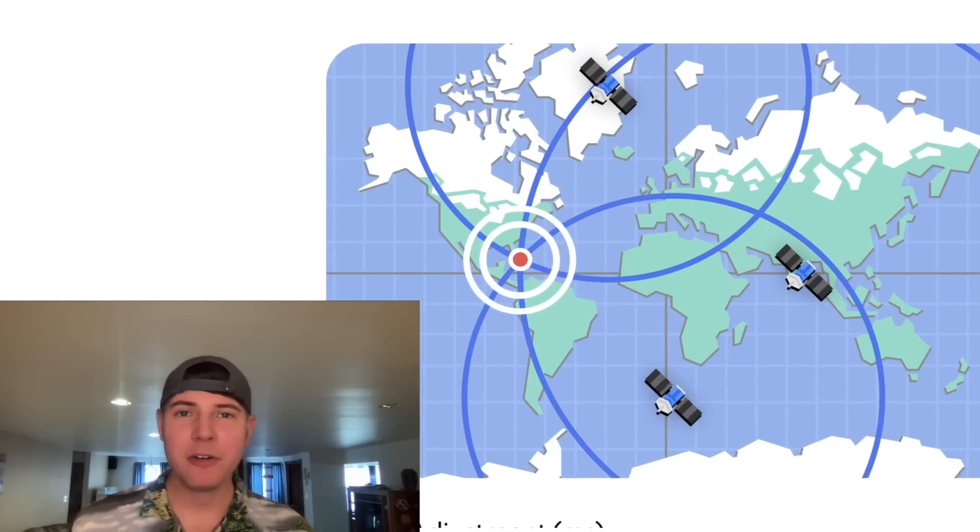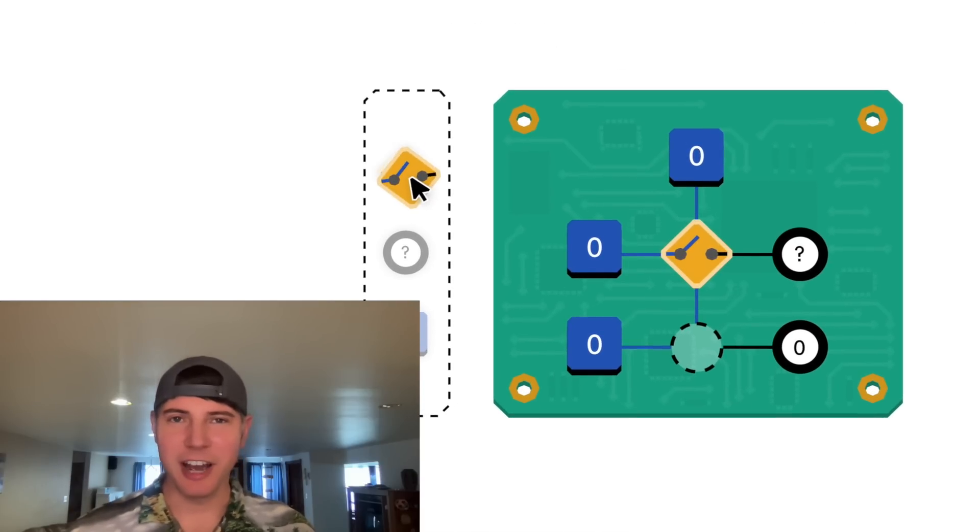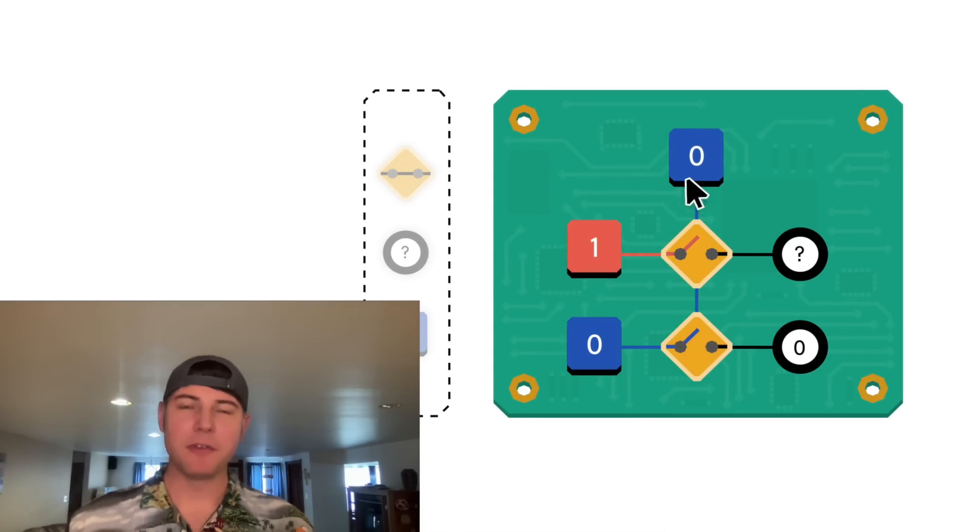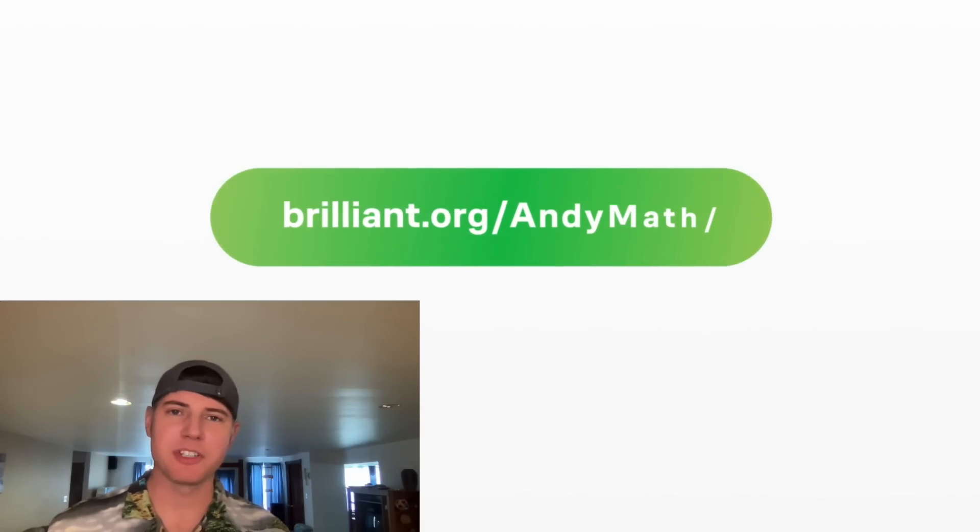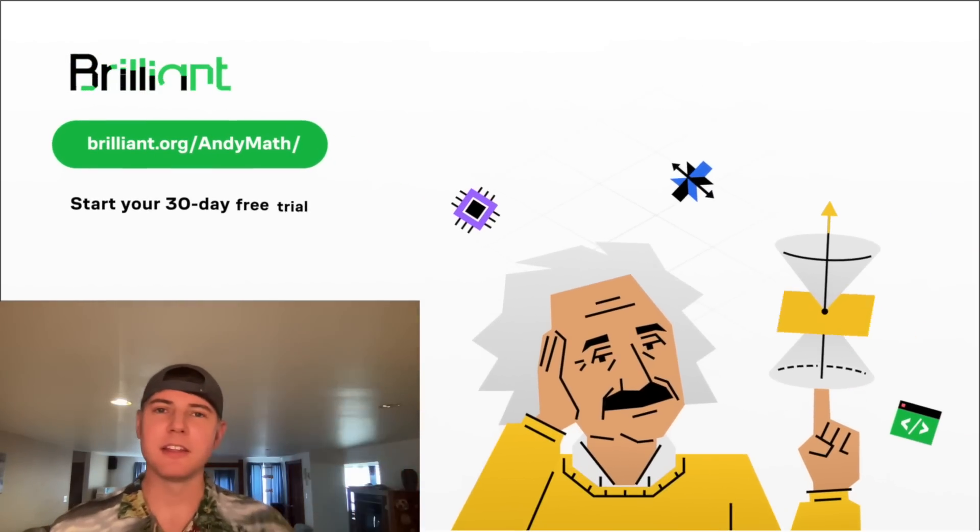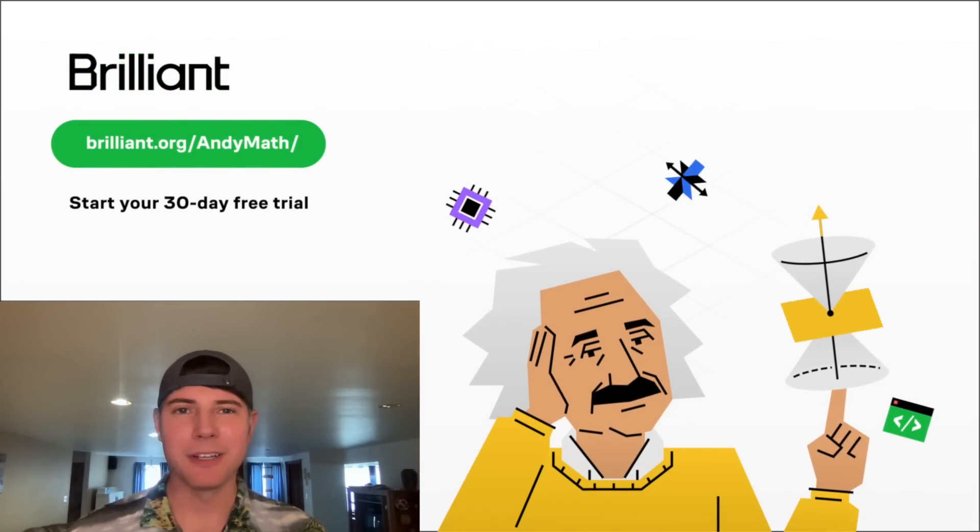It's a good feeling to have a better understanding of what's going on under the hood of all this technology we use all the time. For all I knew a month ago, this stuff could have been running on literal magic. But now I'm starting to get a good high-level view of how it all works. If you want to go through it yourself, Brilliant has a free 30-day trial. Just visit brilliant.org slash andymath, or click on the link in the description. You can also get 20% off an annual premium plan. How exciting.